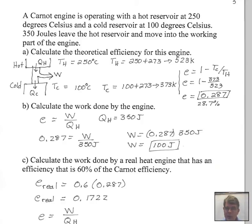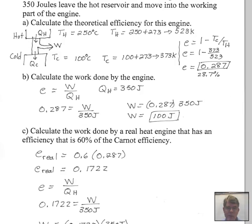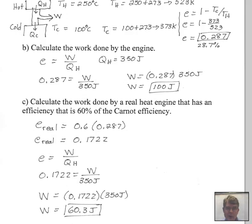Now, what is the work done by a real heat engine that has an efficiency of just 60 percent of the Carnot efficiency? This engine has friction and energy losses in the movement of the energy from the hot reservoir into work. Some of that energy that we normally would pick up with the Carnot engine is lost. So our efficiency is just 60 percent. Well, to find the efficiency of this real heat engine, we just multiply the Carnot efficiency of 0.287 by 0.6. It's 60 percent of the Carnot efficiency. Our real heat engine here then has an efficiency of 0.1722.